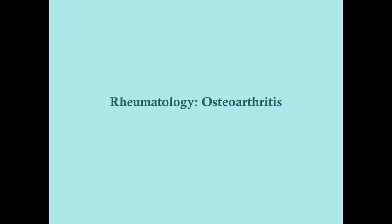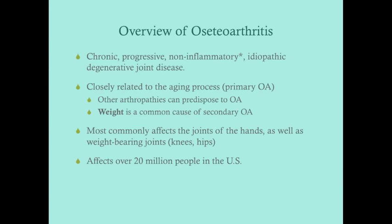We're going to talk about osteoarthritis, which is super common — you should expect to see this weekly if not daily in internal medicine. Osteoarthritis is a chronic, progressive, non-inflammatory, idiopathic, degenerative joint disease. It's chronic in that patients live with it forever; progressive in that it worsens over time; non-inflammatory in that there's no overt synovial inflammation (though some inflammation exists); and idiopathic and degenerative in that we don't know the cause and the joint deteriorates over time.